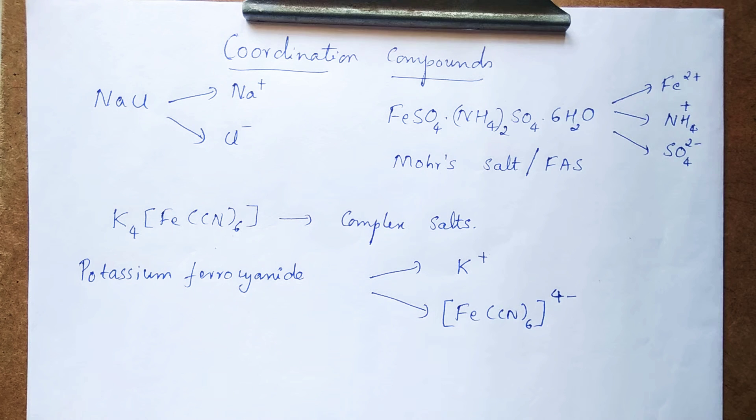The interesting thing here is this ferrocyanide ion will not undergo further dissociation. That's why it is not possible to obtain Fe2+ ions and CN- ions separately. So the important thing is coordination compounds do not undergo complete dissociation in aqueous solutions. They will always be associated with a complex ion like this.